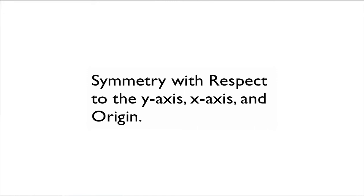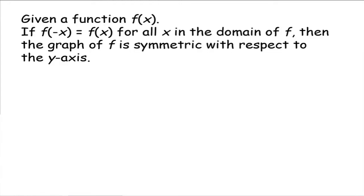You may have noticed when looking at graphs of functions or relations that some graphs have symmetry — symmetry with respect to the x-axis, the y-axis, or the origin. Given a function f of x, if f of negative x equals f of x for all x in the domain of your function, then the graph of f is said to be symmetric with respect to the y-axis.